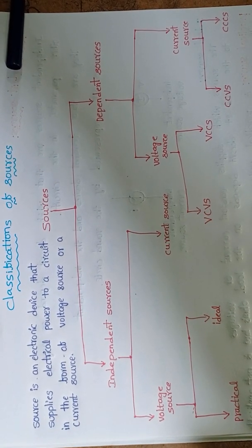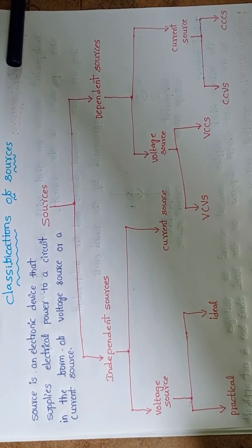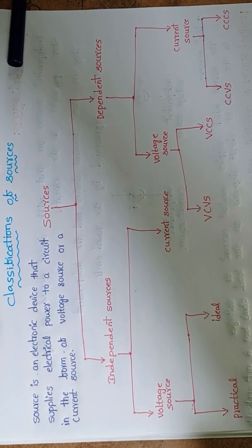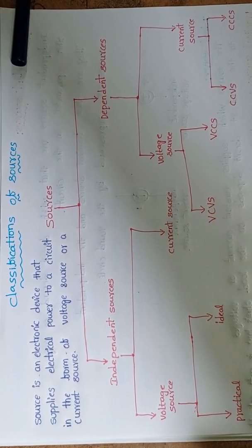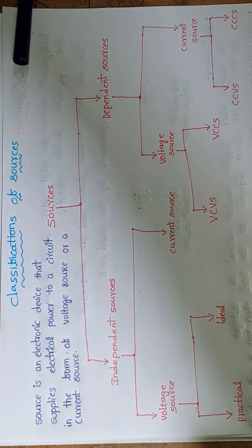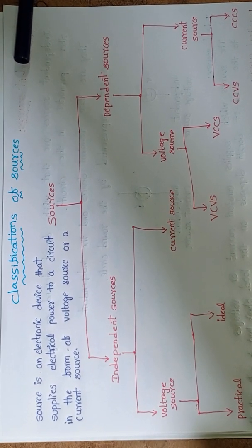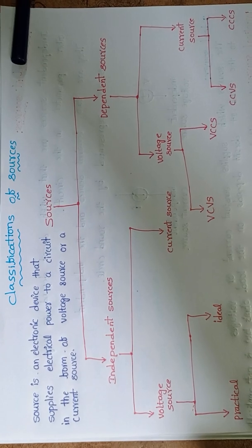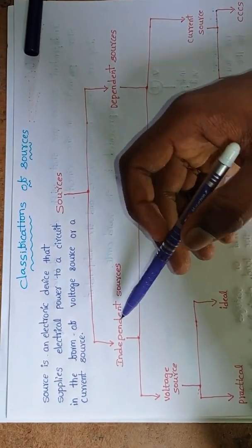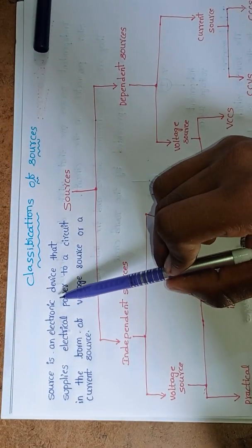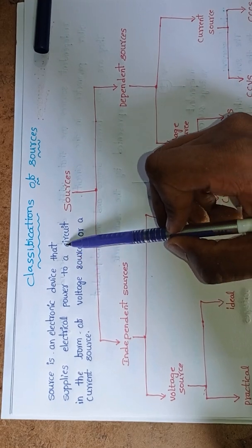Hello friends. From the last video we discussed about what are the different types of circuit elements, that is active elements and passive elements. In this video we are going to discuss about what are the different types of sources in electronic components. Before going to different types of sources, first we define source. A source is an electronic device that supplies electrical power to a circuit.